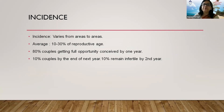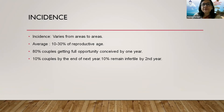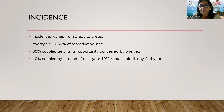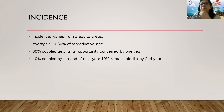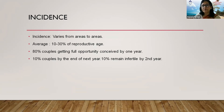Incidence varies from area to area, averaging 10 to 30 percent in the reproductive age. With full opportunity over one year, 80 percent of couples conceive, and in the next year, another 10 percent can conceive. The remaining 10 percent are infertile and need treatment for infertility.